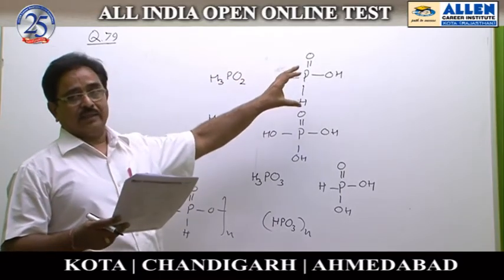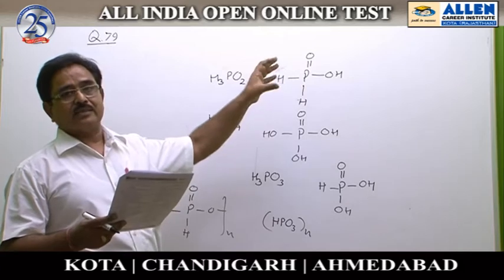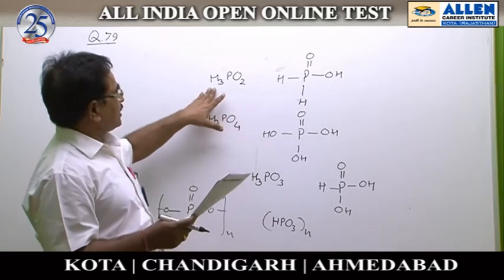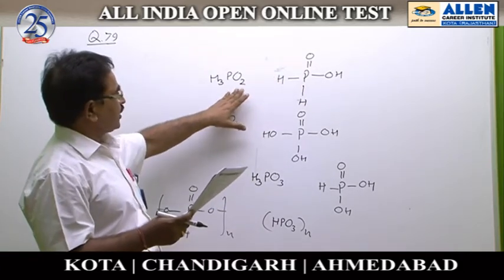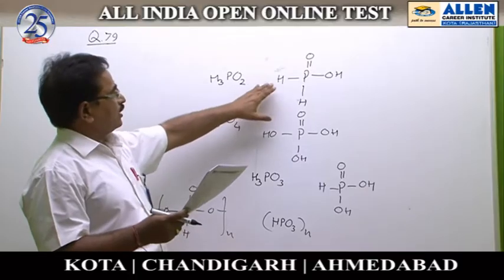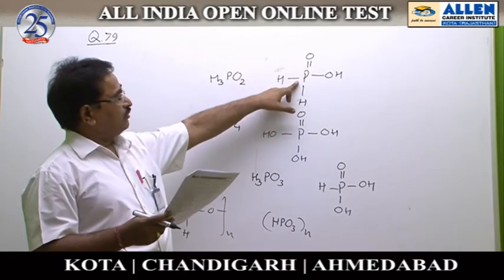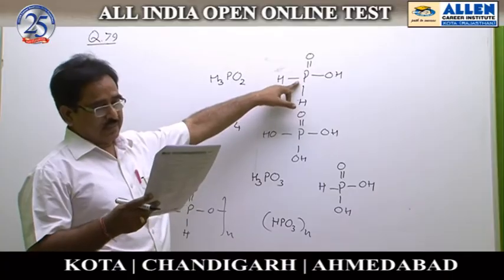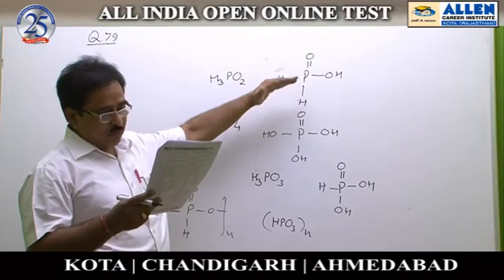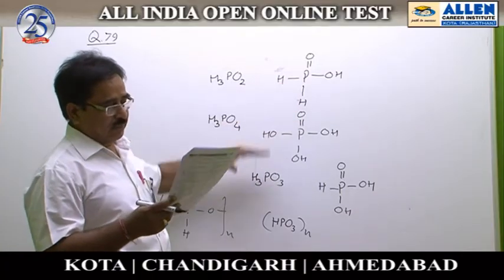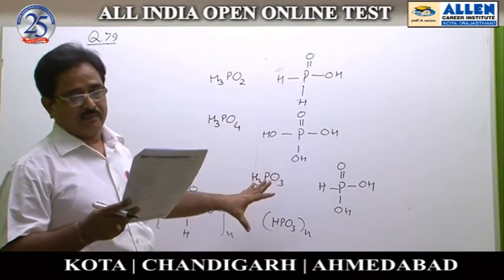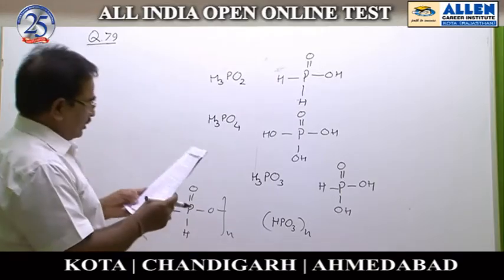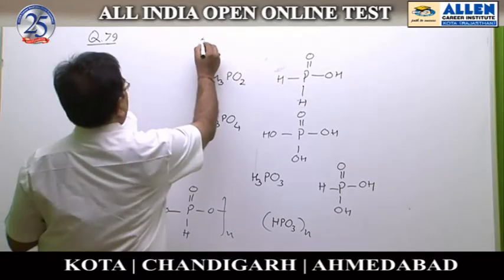In the first option, hypophosphorus acid, two hydrogen atoms are directly bonded with the phosphorus atom. Therefore, it acts as the most powerful reducing agent among the given acids. So the answer is option one.